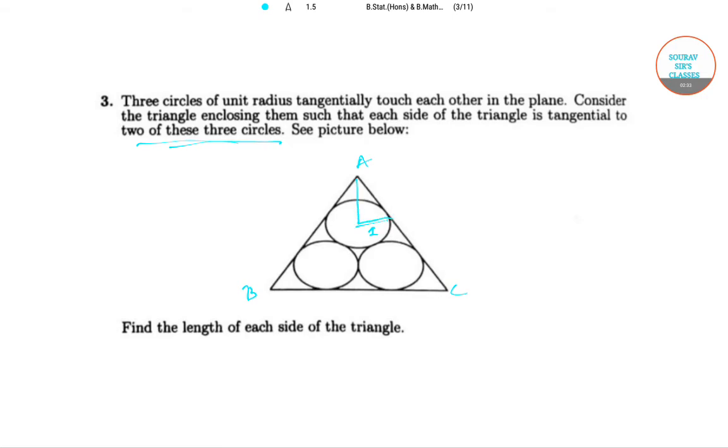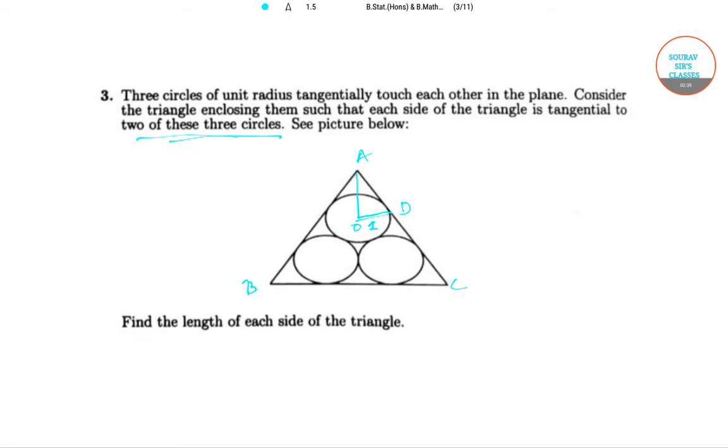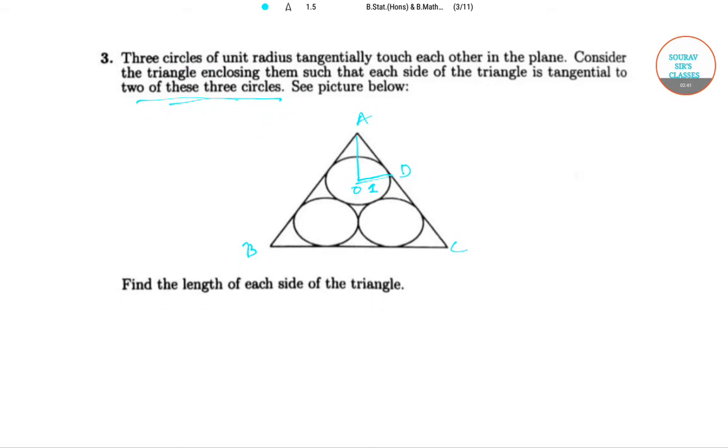Now, since all the three circles are circles of equal unit radius, therefore it is clear that our triangle ABC is an equilateral triangle.